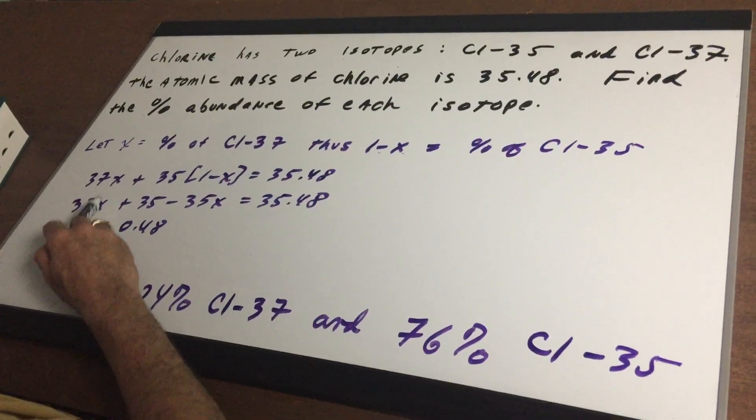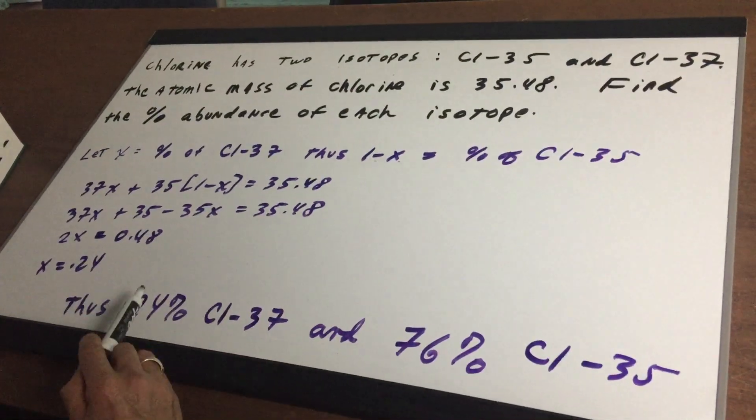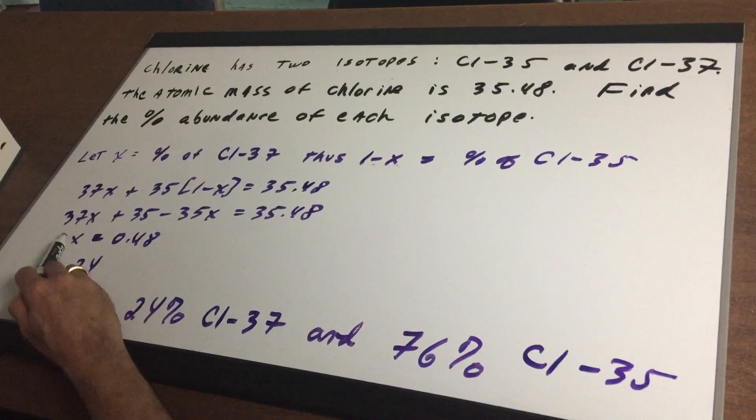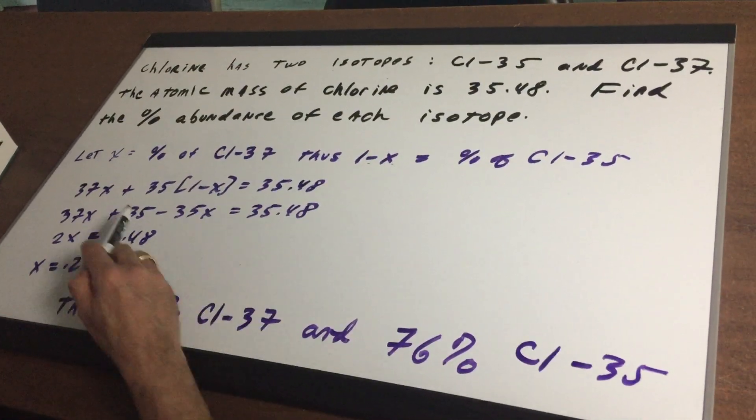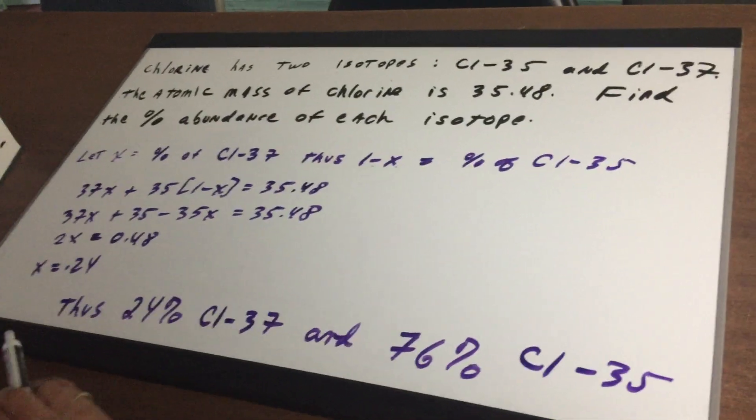So it's 37X. Distributed you get 35 minus 35X equals 35.48. 37X minus 35X is 2X. Subtract the 35 from both sides and you get a nice number. X is 0.24.